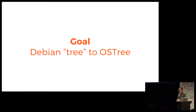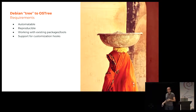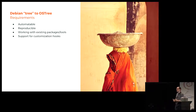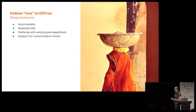Our goal was really to bridge these two worlds. We would like to deploy packages, Debian-style, to a filesystem tree and then use that as an input to create an OSTree to deliver to our users. It has to be an automatable operation — we don't want to be typing commands every time. It has to be reproducible. It should work with existing packages. And it should support customizations outside of the package system itself.